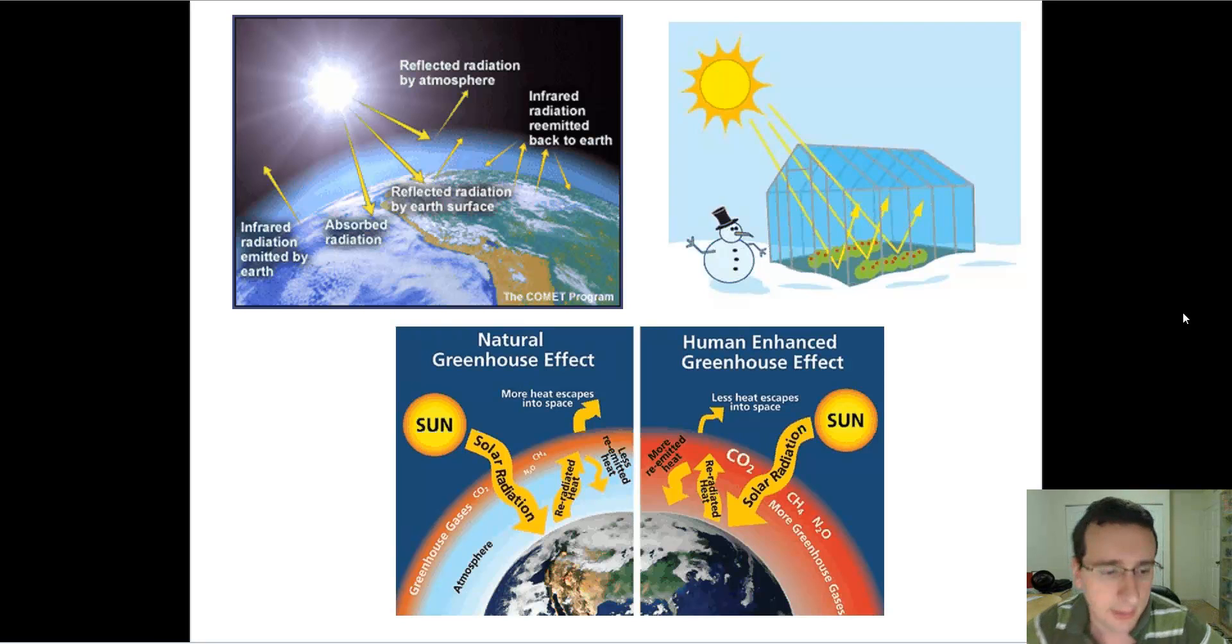You also have the greenhouse effect. It's very important. It's very good, actually. We want the greenhouse effect. Otherwise, it will be too cold at night. Water, methane gas, and carbon dioxide—all of these things are going to be trapping heat from the sun. And these things are naturally in our atmosphere. Methane comes from digestion and decomposition, which are natural processes. Carbon dioxide comes from volcanic eruptions, forest fires, decomposition, cellular respiration, all of these things.